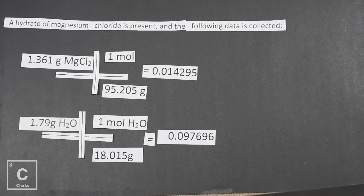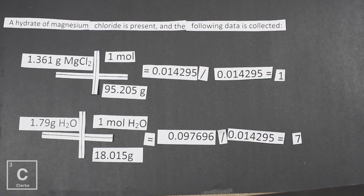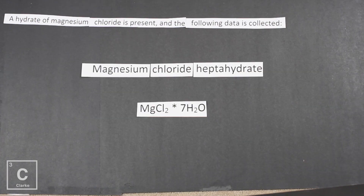Now we need to divide by small. The anhydrate should always be the small — if not, that's your clue that something went wrong. By this point we should be getting whole numbers. The anhydrate divided by itself equals one. And we get seven moles of water for every one mole of magnesium chloride. So the name is magnesium chloride heptahydrate — hepta because hepta is seven. The formula is MgCl₂ — magnesium is plus two, chlorine is negative one — connected with a dot and seven moles of water: MgCl₂ · 7H₂O.